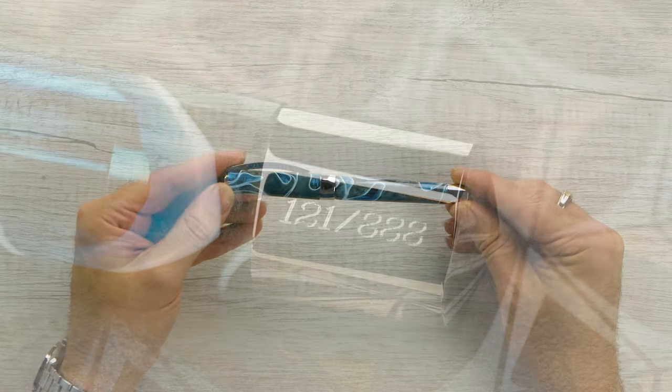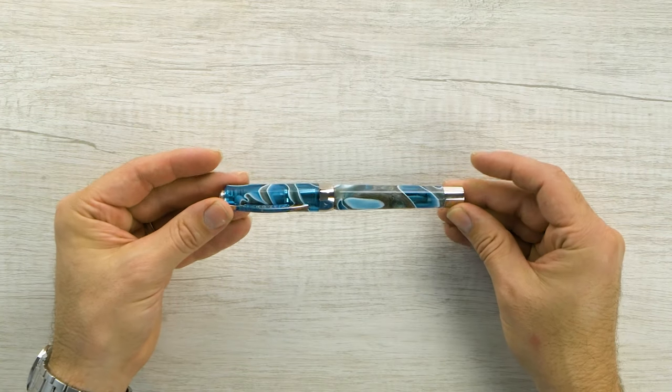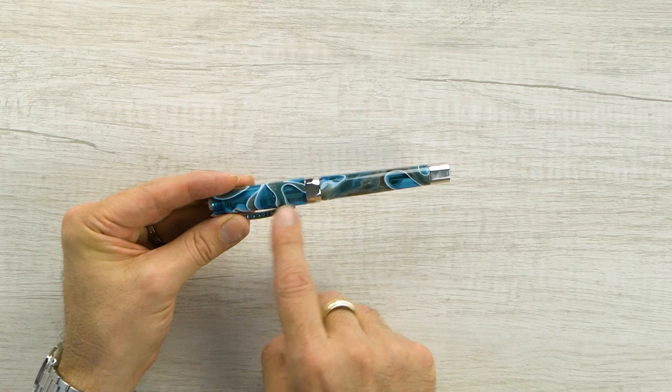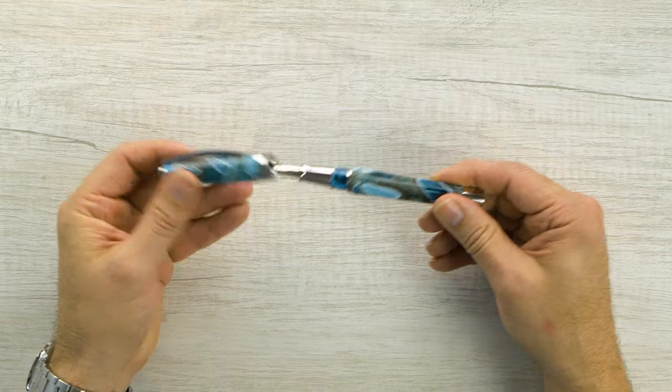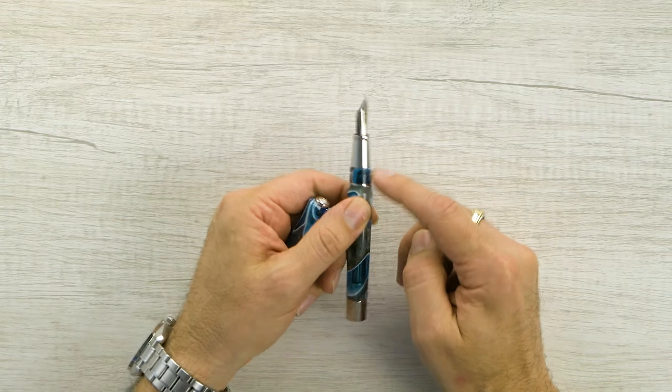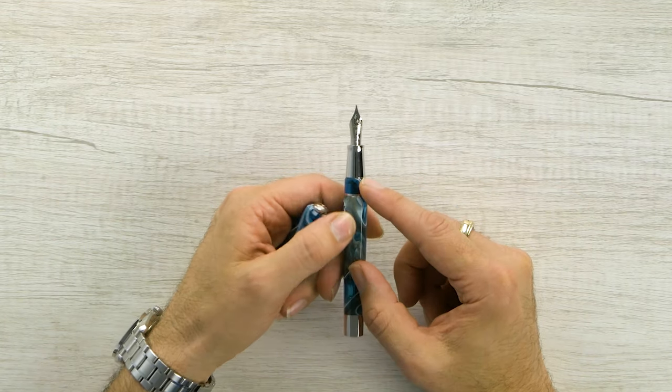And we'll just stare at this beautiful material here for a little bit more. You can see the section. You can see the piston knob in there. Now, this has the hook lock safe mechanism here. It's not threaded.